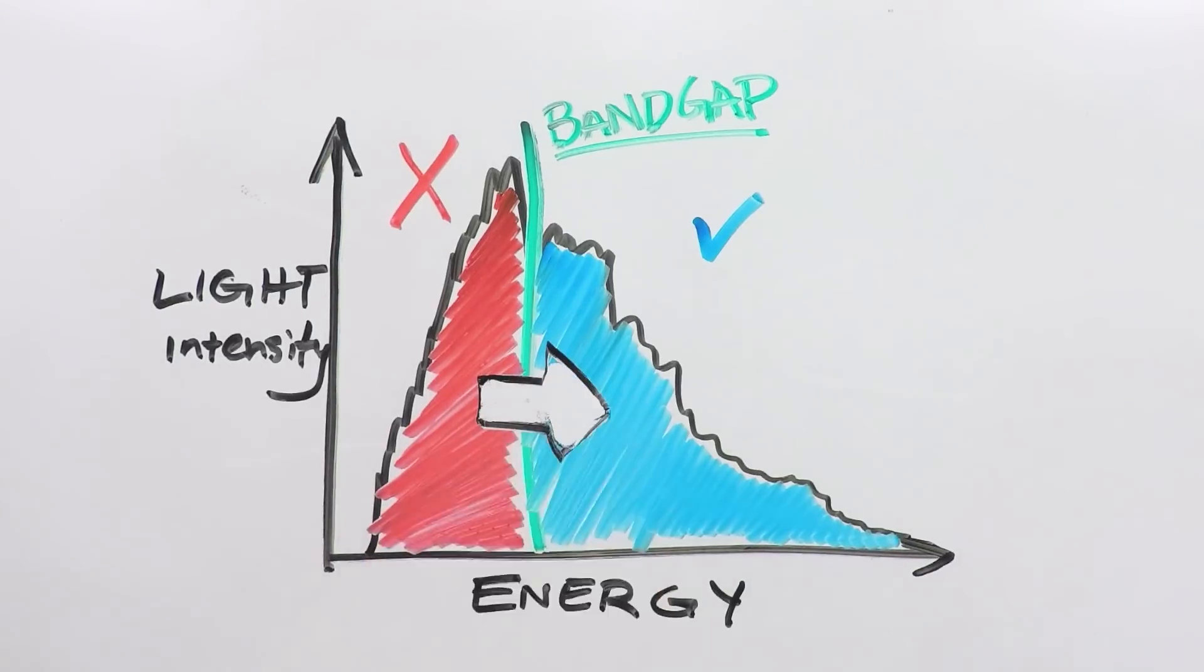The idea is to upconvert this wasted light to energies above the bandgap. This would put all the sunlight to use, letting the solar cell make more electricity than it could before.